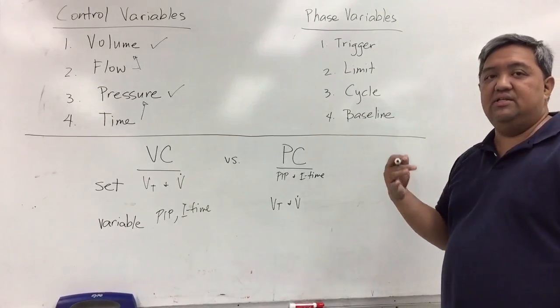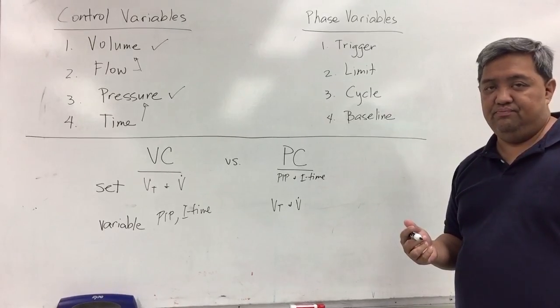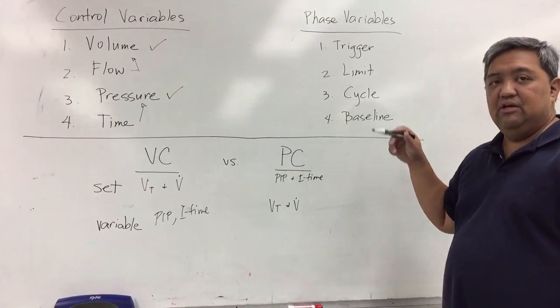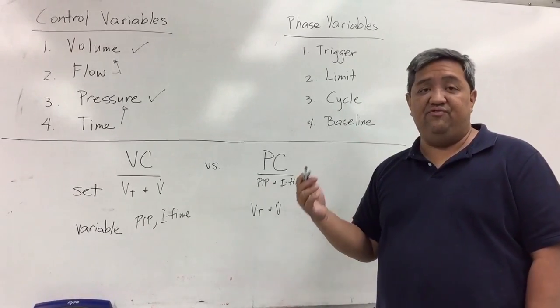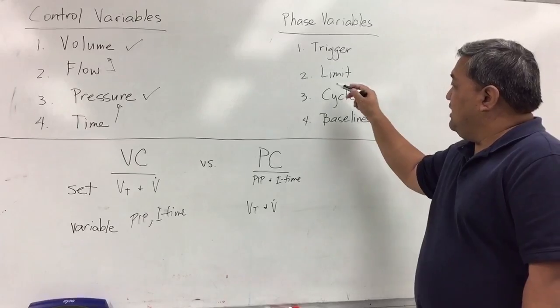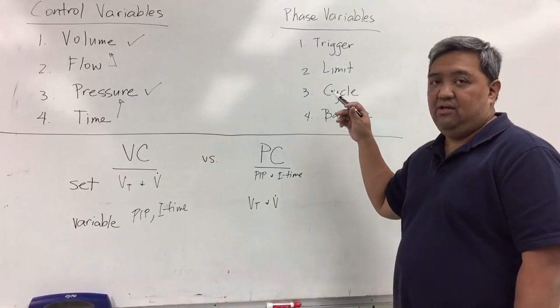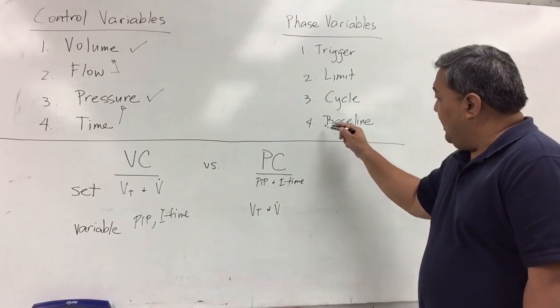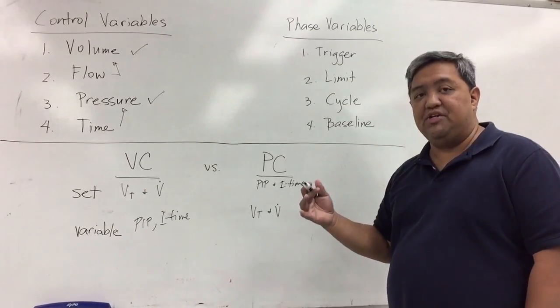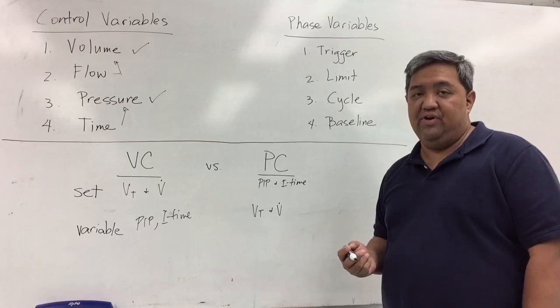Trigger is basically the start of inspiration. Limit, although it does not end inspiration, it sets an upper limit on a given variable. The cycling mechanism, or the cycle, basically ends inspiration and the start of exhalation. And then baseline basically is the pressure at the end of exhalation.